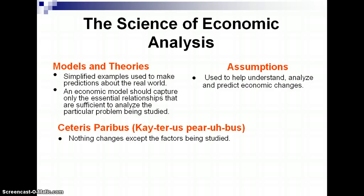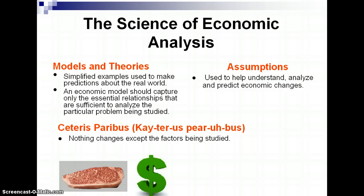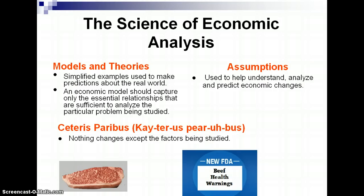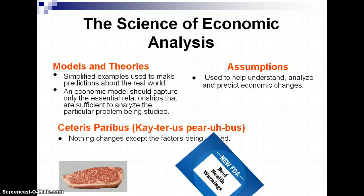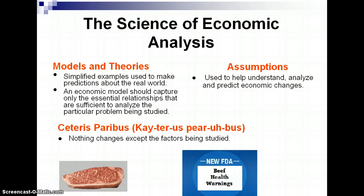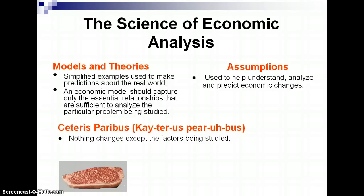Let's look at an example. Suppose the price of beef increased by 20%. Will this result in less beef being sold to the consumer? How can we be sure that the quantity demanded was caused by the price change? What if, on the day of the price change, the FDA placed health warnings on beef? Was the change in the quantity sold caused by the health warning or the price change? Whatever those factors were, we hold them constant. Economists would say an increase in the price of beef will result, ceteris paribus, in less beef being sold to consumers. We assume there are only two variables: the price of beef and the quantity bought.